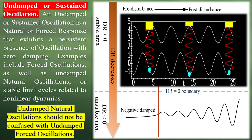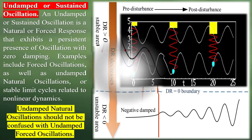Undamped or sustained oscillation: an undamped or sustained oscillation is a natural or forced response that exhibits a persistent presence of oscillation with zero damping. Examples include forced oscillations as well as undamped natural oscillations, or stable limit cycles related to nonlinear dynamics. Undamped natural oscillations should not be confused with undamped forced oscillations.